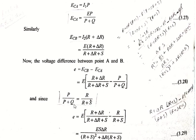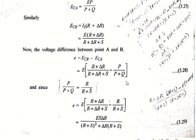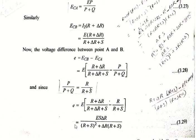Replacing P/(P + Q) with R/(R + S), the entire equation is in terms of R and S. The EMF becomes: e = E × [(R + δr)/(R + δr + S) − R/(R + S)]. After cross-multiplication and simplification, this comes out to: e = E × S × δr / [(R + S)² + δr(R + S)].